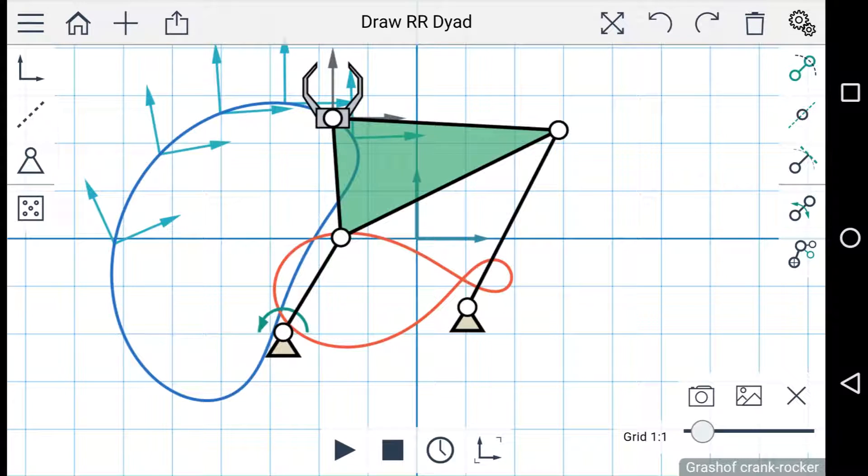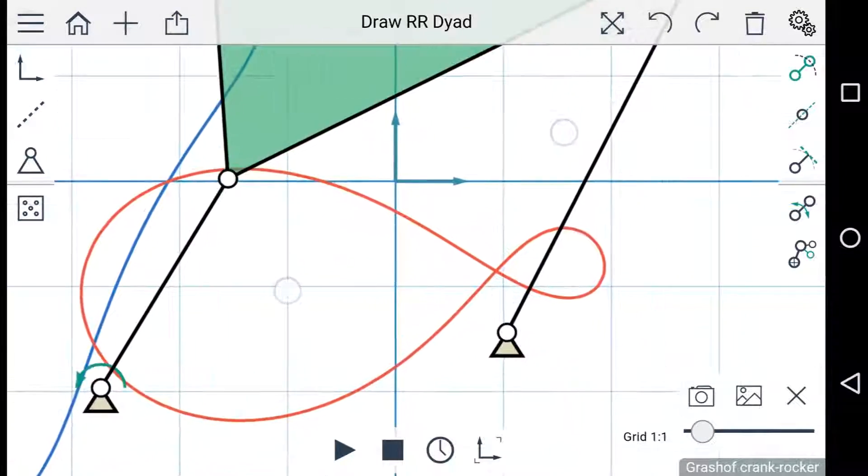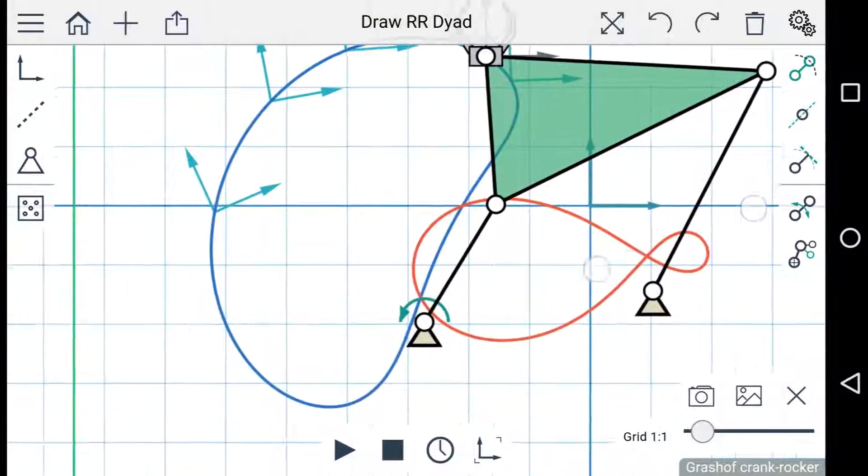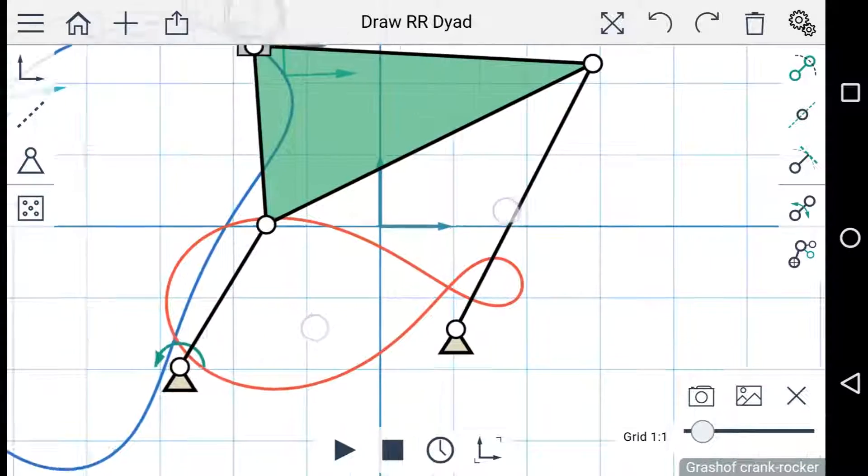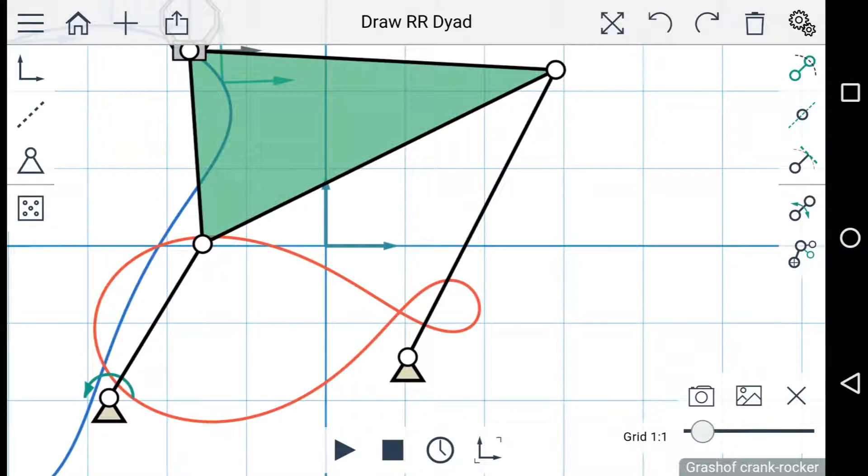You can pan and zoom around the workspace using two fingers. Just pinch to zoom, or drag to pan. If you want to reset the view, there's a button to do that on the menu bar at the top.